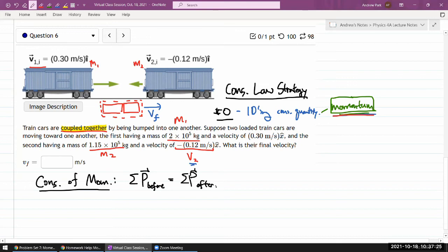The momentum before the collision. So I need to write down the expression for momentum of each of the train and add them together. So I have M1 V1, momentum of the first train, plus M2 V2, momentum of the second train.